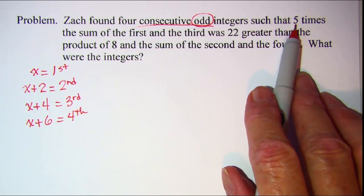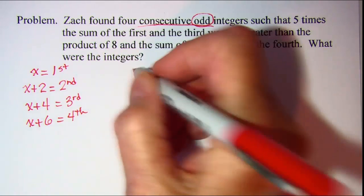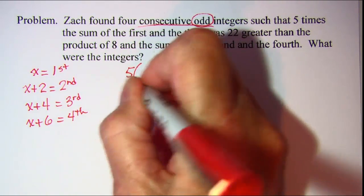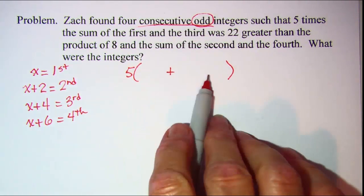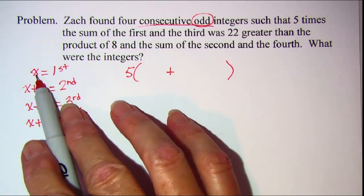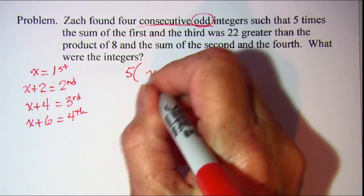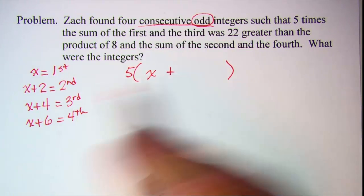We're going to start right here. Five times the sum so I need five times the sum of two things. The first which is x and the third which is x plus 4.